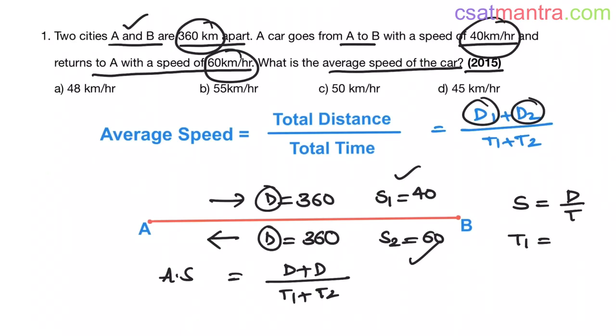So here, t1 equals d1 by s1, d1 is d, in both cases d is the same, s1. t2 equals d2 by s2, that equals d by s2. So let's substitute t1, t2 values in this equation.